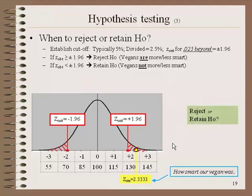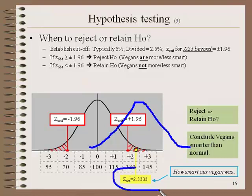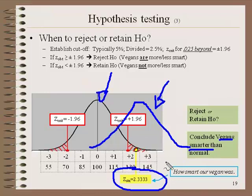In this case, we're going to reject the null hypothesis — we're going to conclude that vegans are smarter than normal. To recap, that's because our Z-obtained score was extreme enough that we assume it's coming from some alternative distribution. In other words, there's an alternative distribution that we think this Z-obtained comes from — a distribution where vegans are smarter than normal. It does not come from the null distribution.